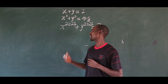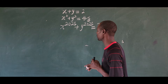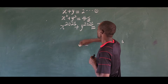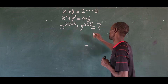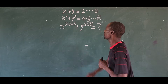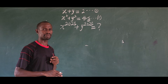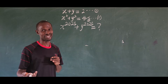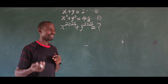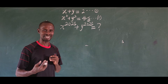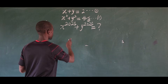Welcome to another video. We have this challenge before us. The question is: x plus y equals 2 — let's take this as equation 1. Then we have x squared plus y squared equals 4 over 3 — let's take this as equation 2. We are asked to find the value of x to the power of 2025 plus y to the power of 2025, in honor of the year 2025.